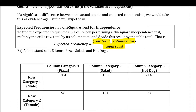Let's look at a simple example. A food stand sells three items, and we're trying to see if the choice a person makes — either pizza, salad, or a hot dog — has any dependency on their gender, male or female. The observed counts show 204 males ate pizza, 199 males ate a salad, 214 males ate a hot dog. For females: 96 ate pizza, 121 ate a salad, and 98 ate a hot dog. The question is whether your food choice and your gender have anything to do with each other — are they dependent?